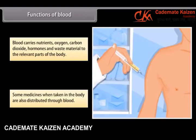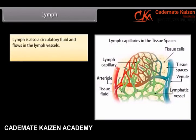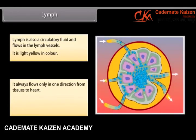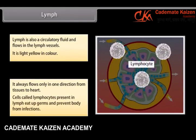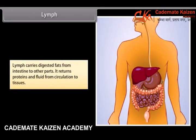Some medicines when taken in the body are also distributed through blood. Lymph is also a circulatory fluid and flows in the lymph vessels. It is light yellow in color and always flows only in one direction, from tissues to heart. Cells called lymphocytes present in lymph eat up germs and prevent body from infections. Lymph carries digested fats from the intestine to other parts and returns proteins and fluid from circulation to tissues.